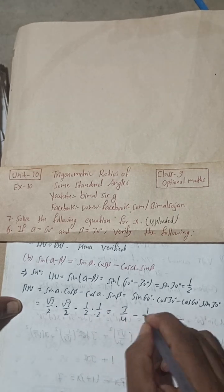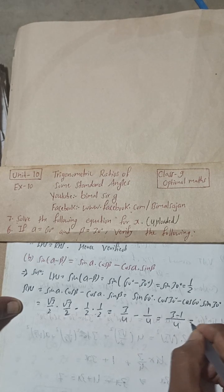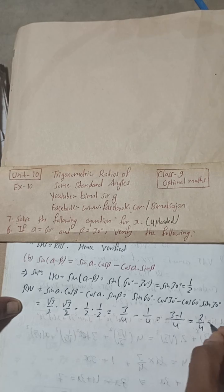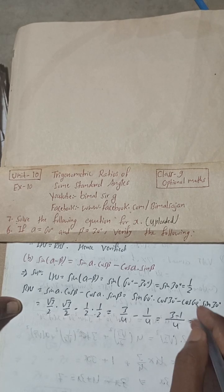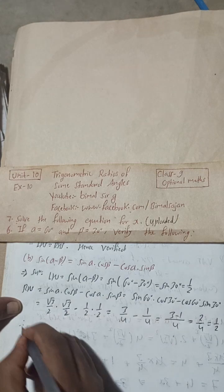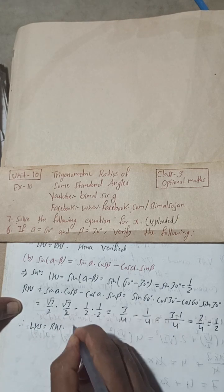So there is 3 minus 1. The LCM is 4. Now this is 3 minus 1 equals 2 by 4, so this is equal to 1 by 2. Therefore, LHS is equal to 1 by 2, RHS is 1 by 2. Therefore, LHS is equal to RHS. Hence proved.